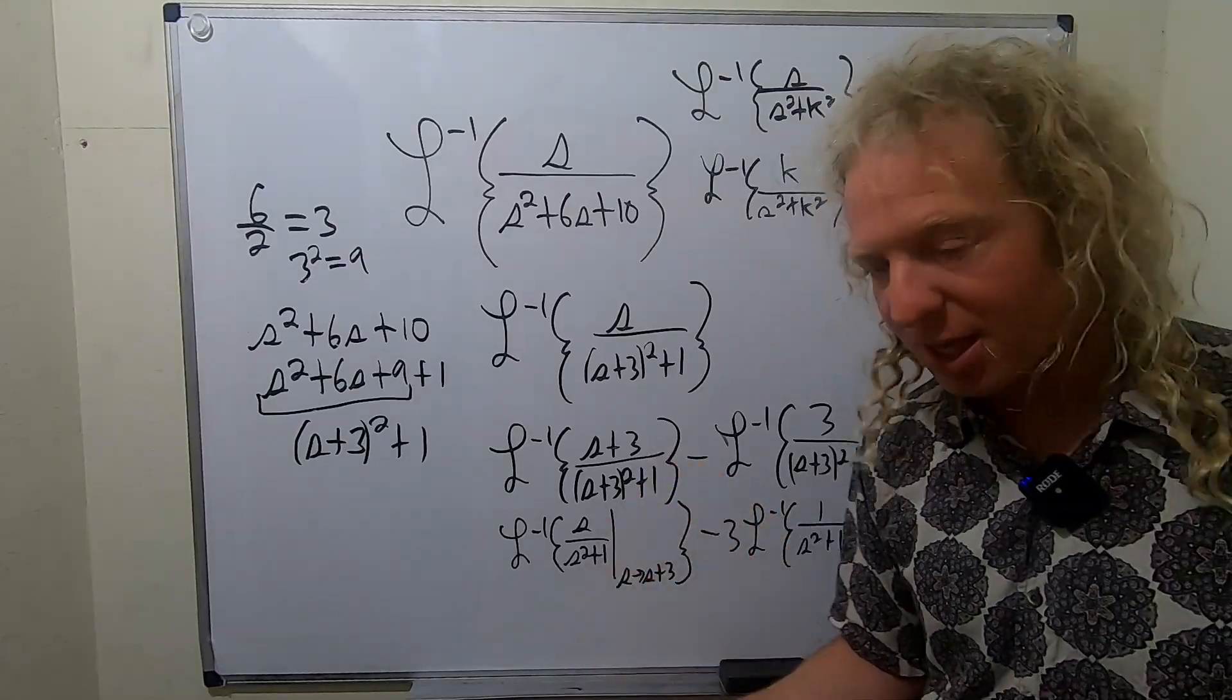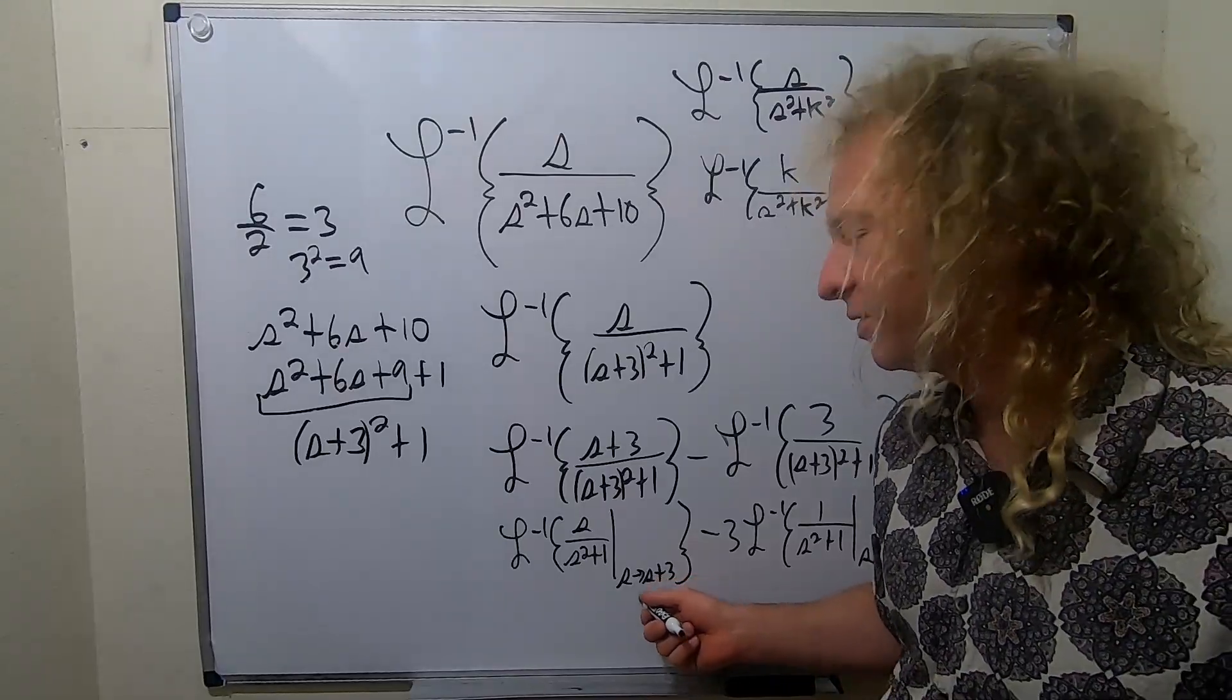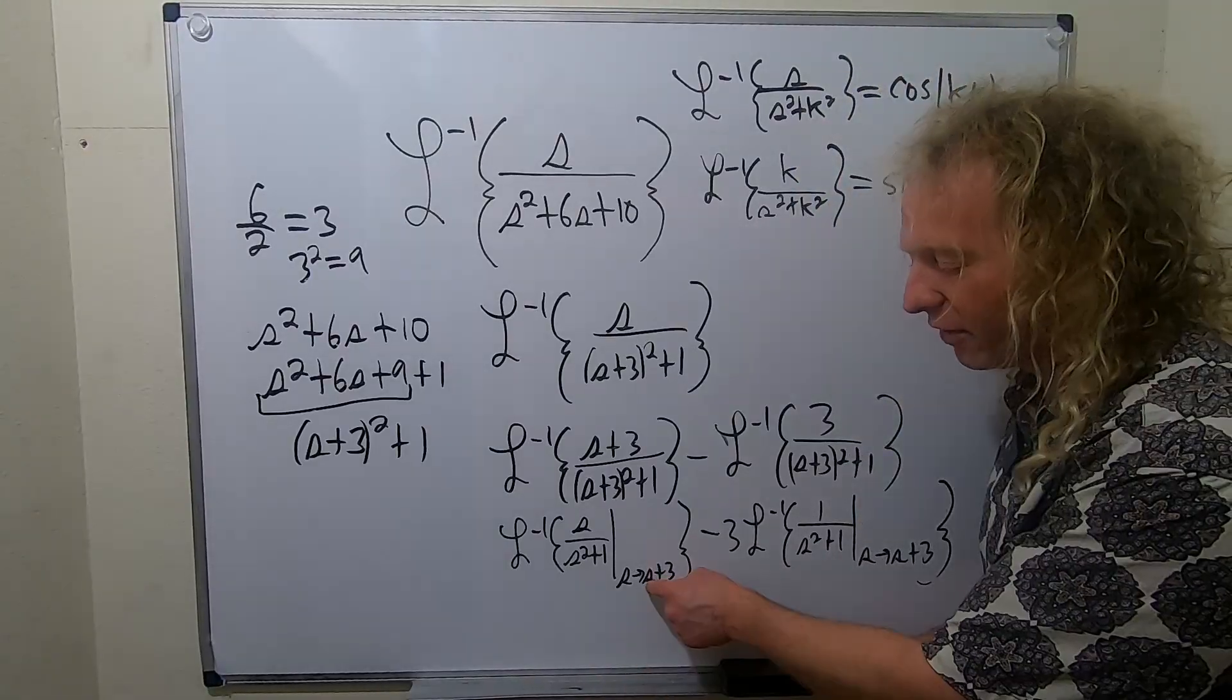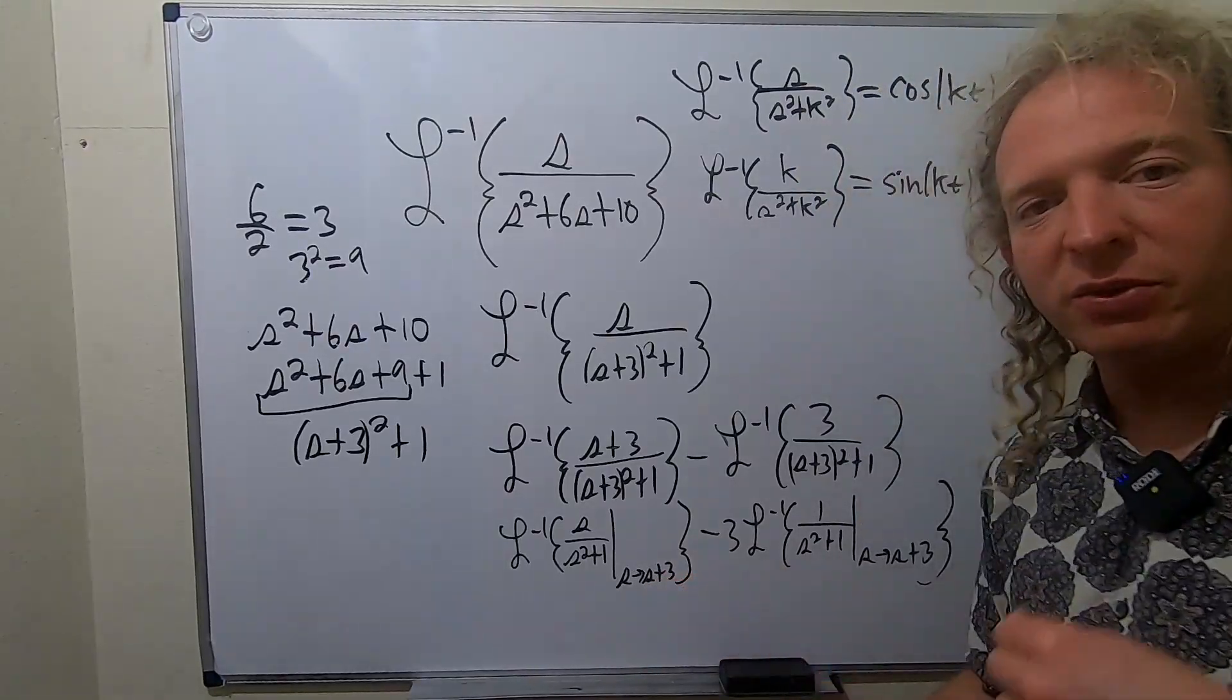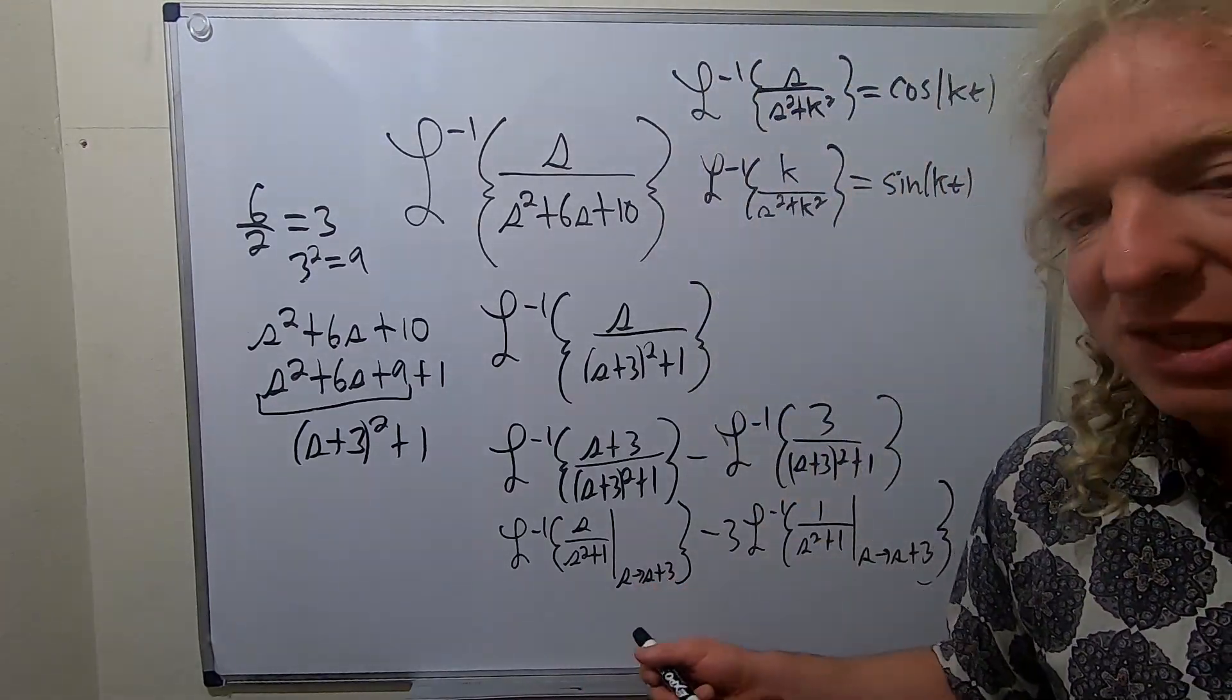So cosine has the s. The first one's going to be a cosine. And whenever you do a shift, it's going to give you an e. So if you have s minus 3, it would give you e to the 3t. Because you have s plus 3, it's going to give you e to the negative 3t.